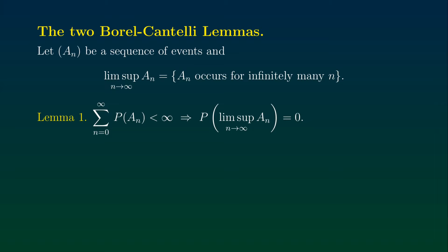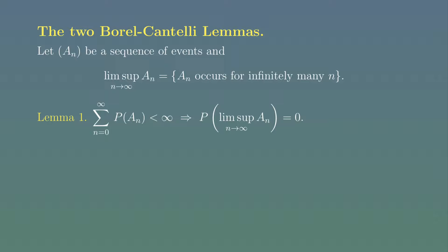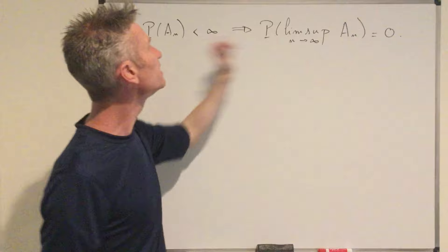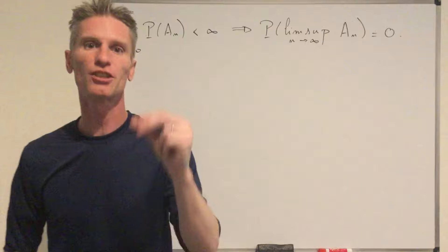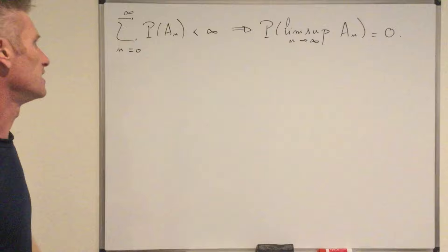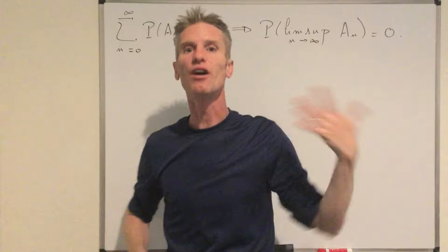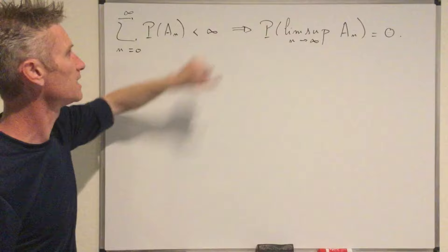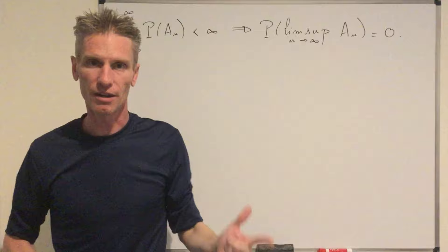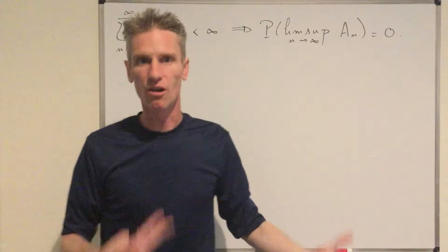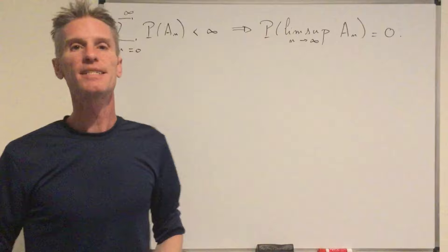The first Borel-Cantelli lemma states that if the infinite sum of P(A_n) is finite, then the probability of the lim sup of A_n is equal to 0. I've rewritten the implication here — that's what we want to prove. This is the result we will need to prove that convergence in probability implies convergence almost surely for a subsequence. If you have in mind that the lim sup of A_n is the event that A_n occurs for infinitely many n, this means that if the sum is finite, then only a finite number of those events is going to occur — or there is probability 0 that infinitely many of them occur.